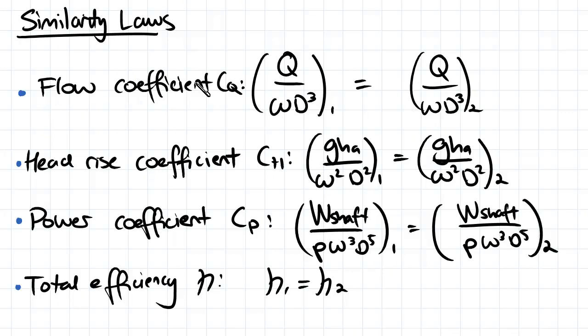So our flow coefficient, that is the flow rate divided by the angular velocity divided by our diameter cubed. And then we've got our head rise coefficient, that's equal to gravity times our gain in head divided by our angular velocity squared divided by our diameter squared, and that remains constant.